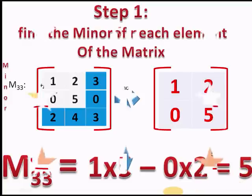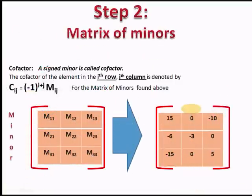Step 2: With all the minors found, we form a matrix using those elements in the same order to produce the minor matrix.